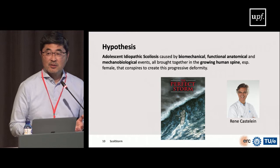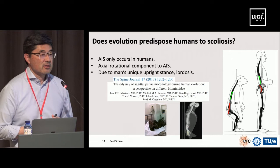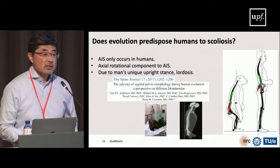AIS only occurs in humans — it occurs in no other animal. That made us think about what is actually unique about humans compared to, for example, non-human primates.